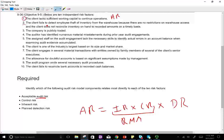The client fails to detect employee theft and inventory from the warehouse because there are no restrictions on warehouse access and the client does not reconcile inventory on hand to recorded amounts on a timely basis. This is a control risk. There is no control. The company is not properly protecting their inventory, so this is a control risk and the control risk will go up.